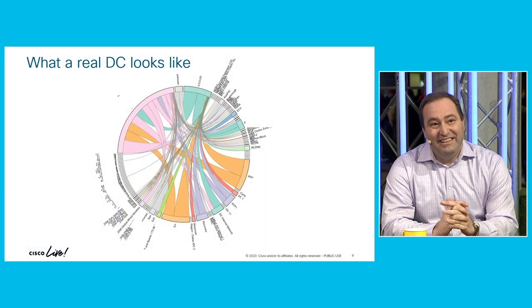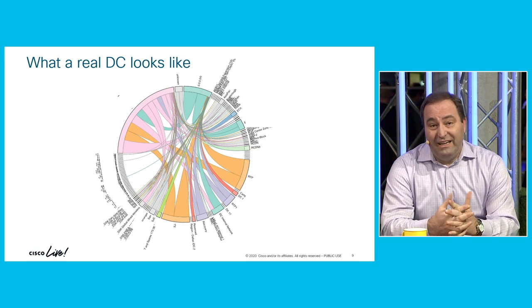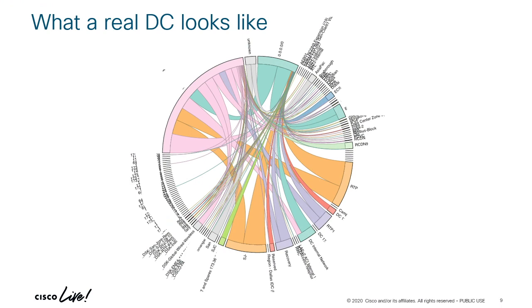We've covered up the IP addresses here to hide the innocent, but this is what a real data center communication looks like. The dots and arrows represent all the communications between tiers, and the thickness of each bar indicates the volume — the thicker the bar, the more communication is happening. Doing segmentation on this would be very, very complex. This is just one data center, and all of those conversations are going around. To be fair, this is not something you can just do with something like ACI alone.